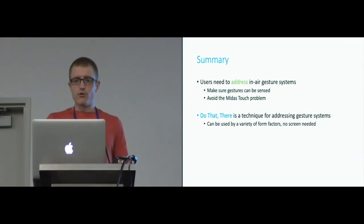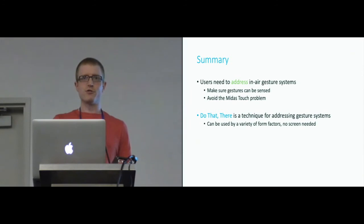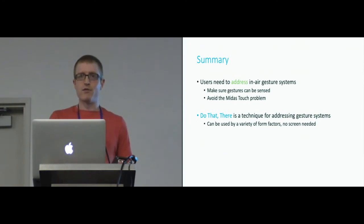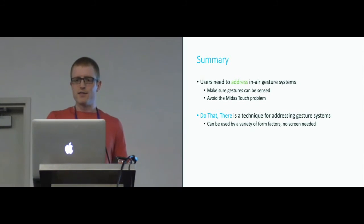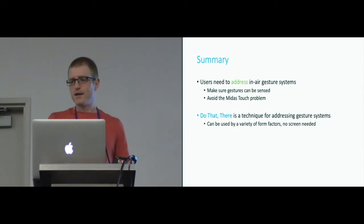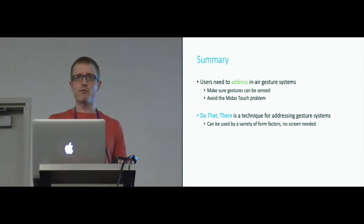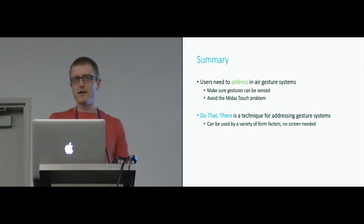In summary, the Do That There interaction seemed to be successful. Users completed almost all gestures and did so within 80 millimeters of the target points in the third study — quite good considering they were gesturing with large arm movements from the opposite side of the room, several meters away. Interaction time was good: users found where to gesture and matched the correct gesture within about four seconds, addressing the system within that time. In terms of feedback design, it was better to combine feedback across all modalities rather than giving different types of information from different ones. We could also stop giving feedback about where to perform gestures once users had started providing input. To conclude, users need to address mid-air gesture systems so their input can be sensed and their gestures only affect the intended system. Do That There is a technique for addressing mid-air gesture systems that can be used by a variety of form factors without needing a screen — from typical gesture systems with large displays to emerging systems like mobile phones, small objects, or in-car interfaces.